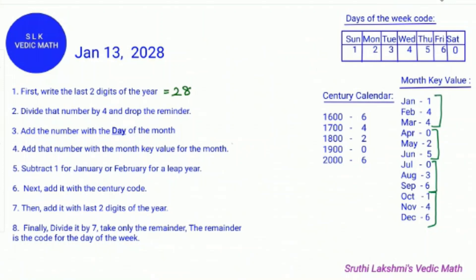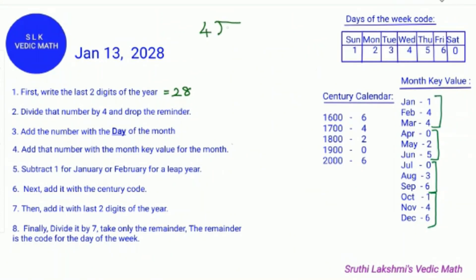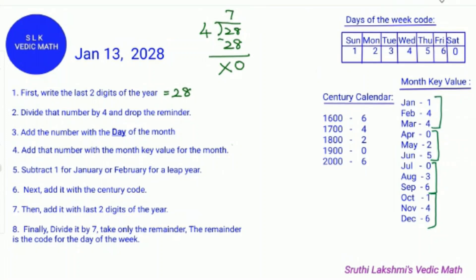Next, divide that number by 4 and drop the remainder. So we do 28 divided by 4. Since 4 times 7 is 28, we get 28 minus 28 which is 0 remainder. We drop the remainder and take the quotient, which is 7.